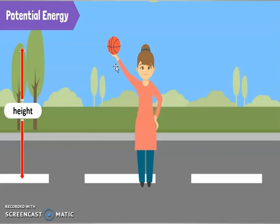Now, if you can see, there is a girl who has a ball in her hand. Until she is standing still holding it, she has stored energy in its stored form, and that is called potential energy.